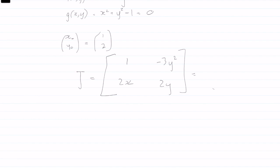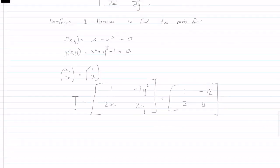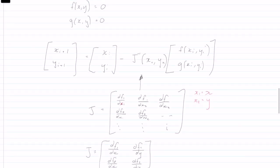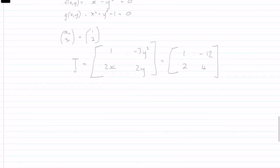And plugging in values, we are left with one minus 12, two and four. Now it's important to know that we have the inverse of the Jacobian, not the Jacobian itself.